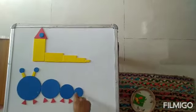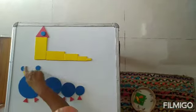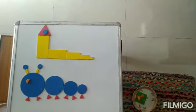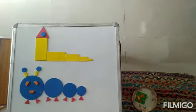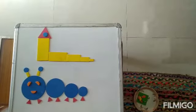And how many circles? One, two, three, four, five, six. Let me give eyes to this caterpillar. Eye. Both eye and this mouth. I hope you all enjoyed this caterpillar.